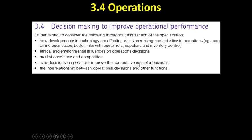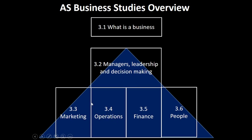How do decisions in operations improve competitiveness? So if we do sack all our workers and replace them with machinery, what's that going to do to our costs? Is it going to make us overall a more profitable business? And the relationship between operational decisions and other functions — as you're going through this unit, it's very tempting if a question comes up in an exam and it's an operations question, maybe that question is: should this business become more capital intensive?